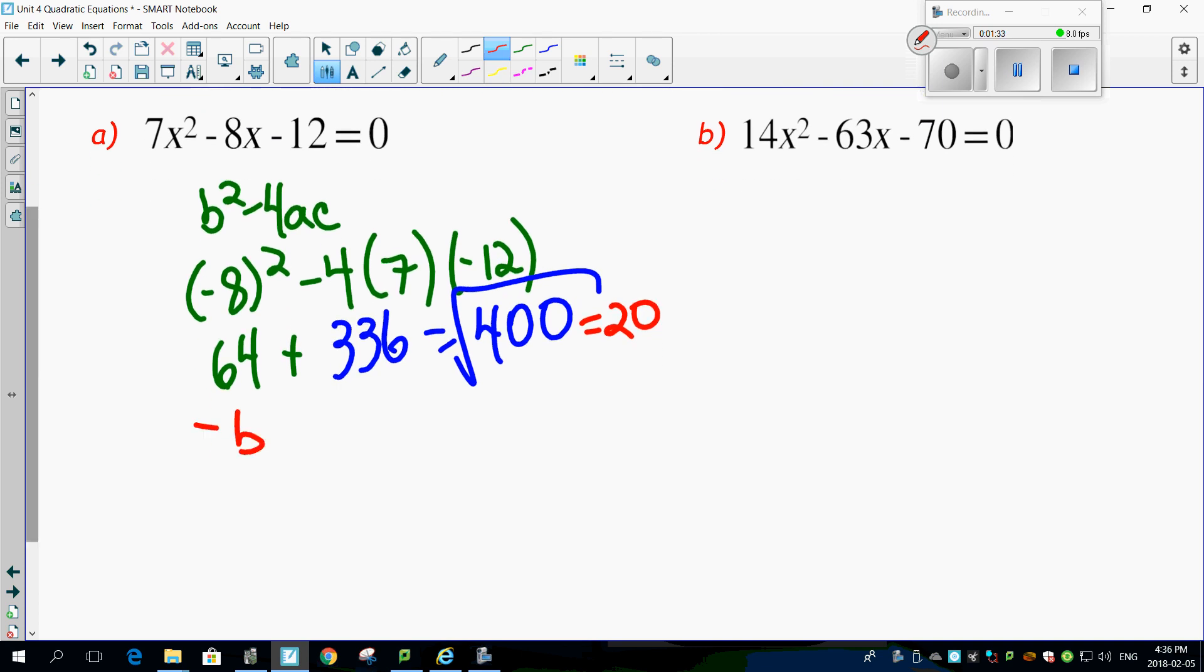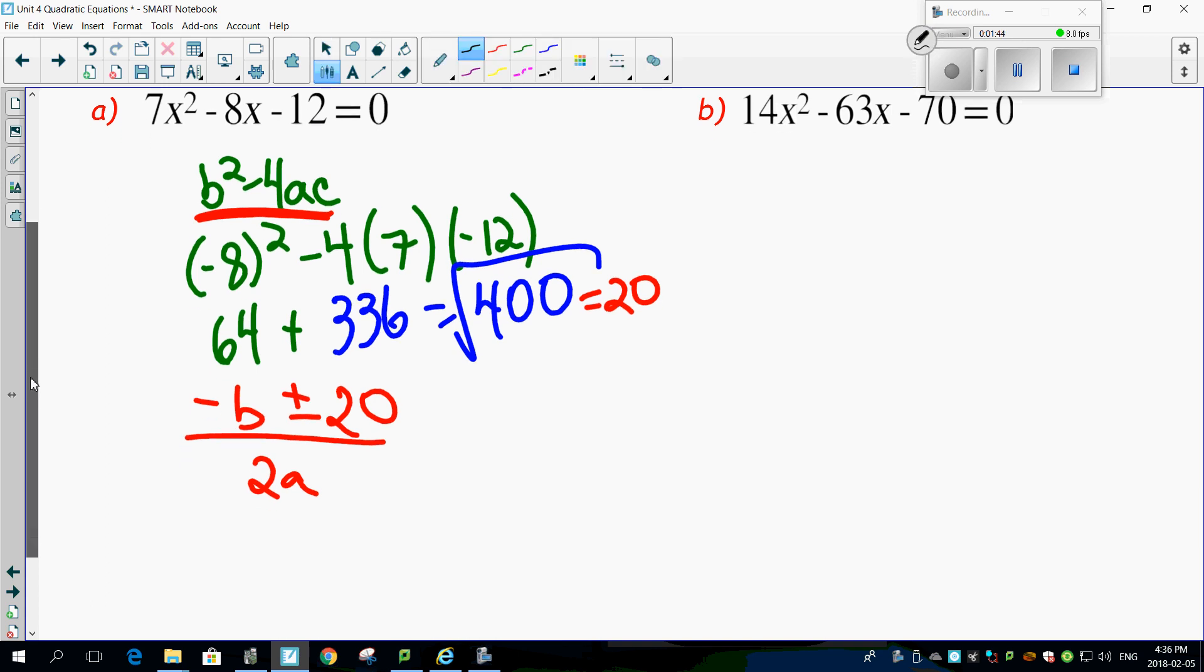Minus b plus or minus. I know the square root of 400 because I found the discriminant is 20 over 2a. Just substitute the values in, and we're good to go, and we're solved. So, minus b is minus a minus 8. Plus or minus minus 20 over 2 times 7. 2 times 7 is 14.